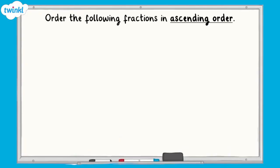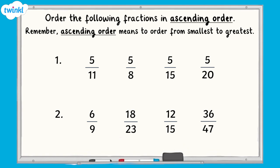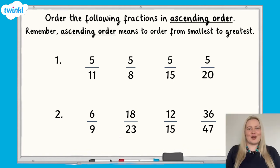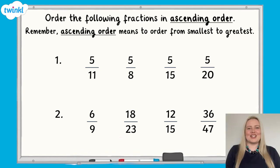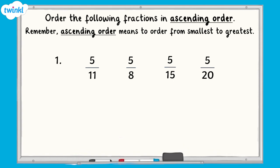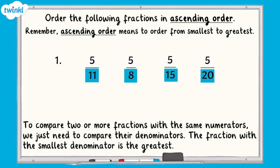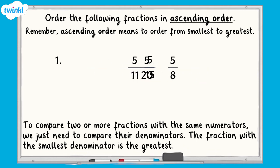Time for a challenge. You need to order these fractions in ascending order. Remember, ascending order means to order from smallest to greatest. Pause the video now and have a go. Well done! Here are the answers on the screen now so you can see how you got on. In question one, all of the numerators are the same, which means we can just compare the denominators. The smaller the denominator, the larger the fraction. So, in ascending order, the fractions are five-twentieths, five-fifteenths, five-elevenths, and five-eighths.